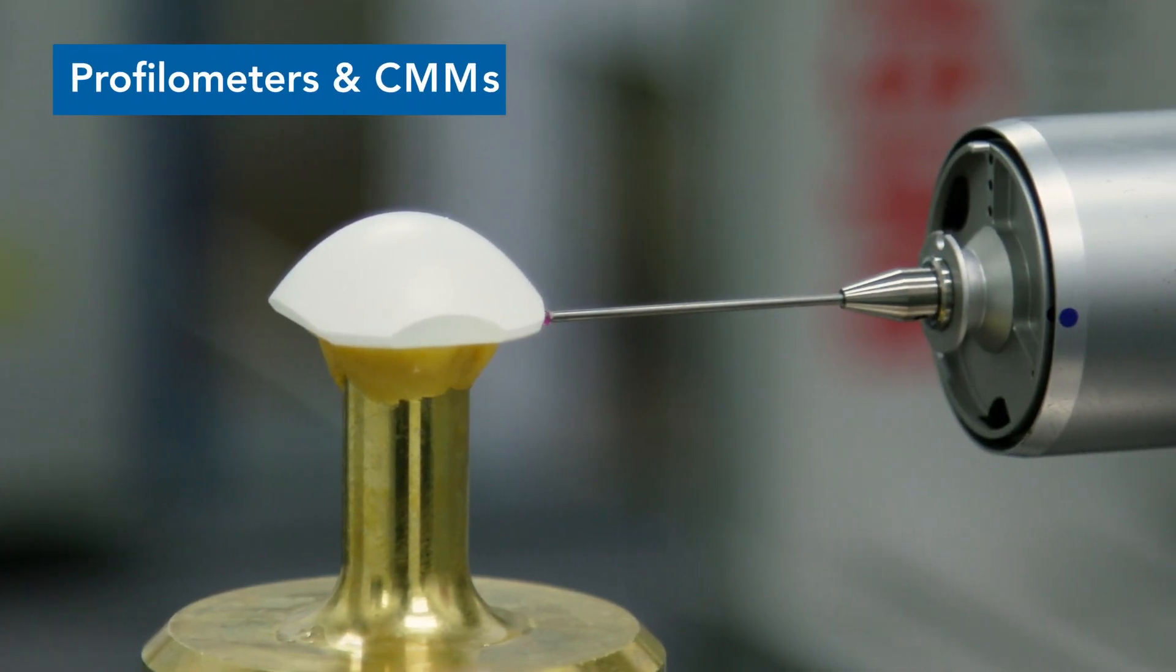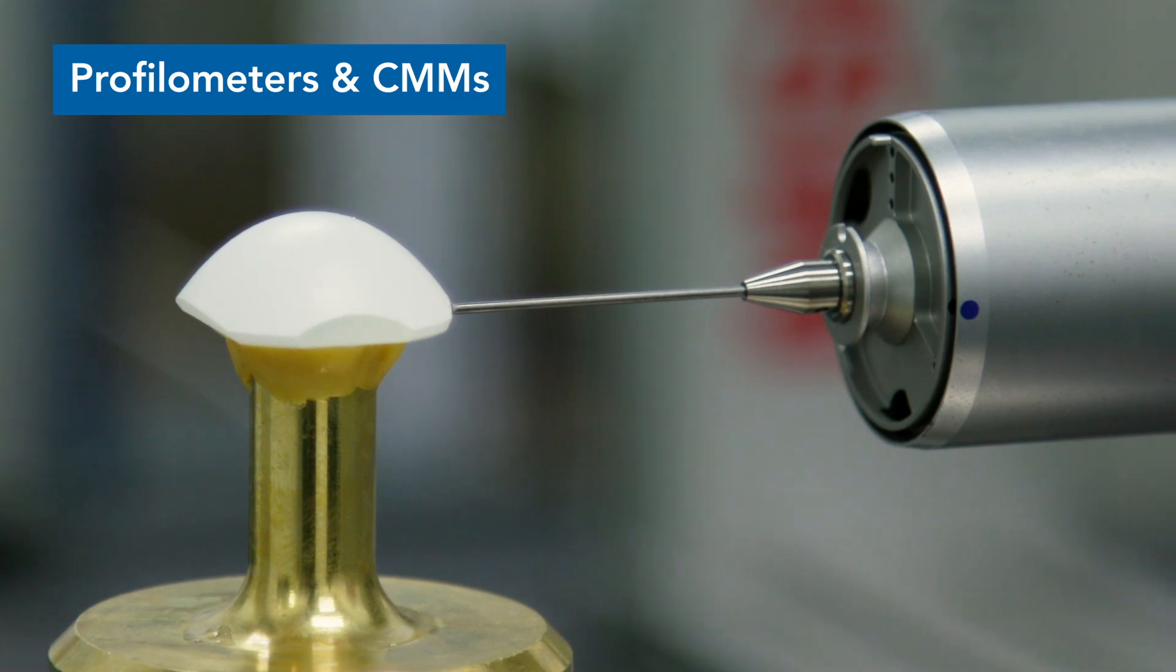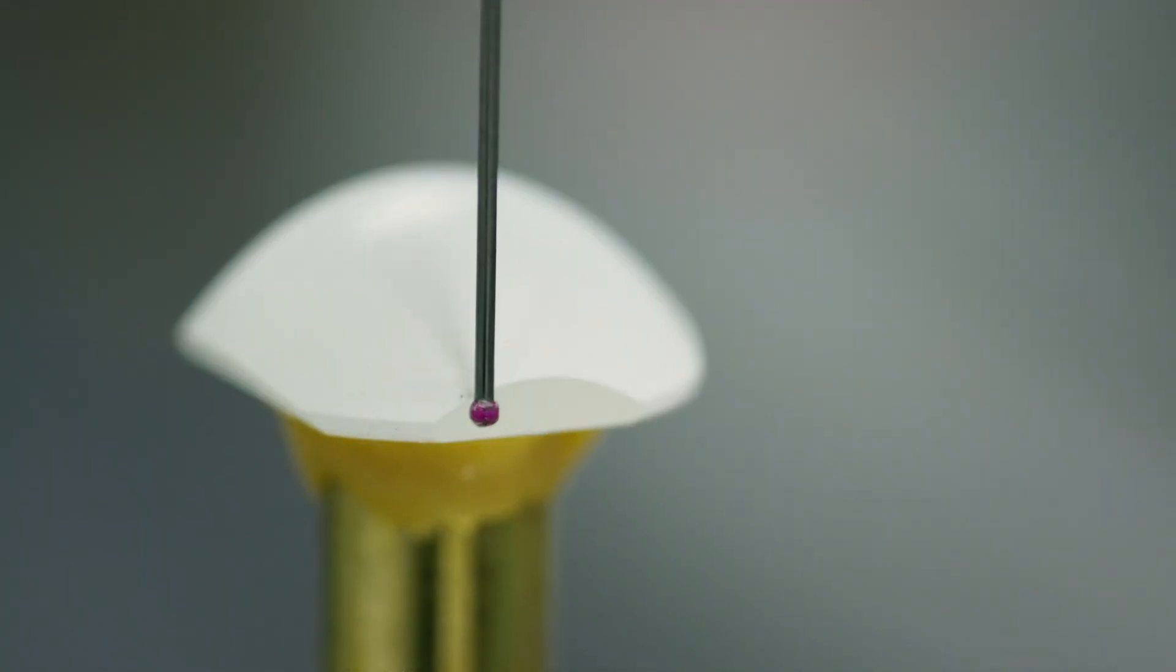Profilometers and coordinate measuring machines, or CMMs, probe the surface of optical components to determine surface curvature, flatness, and irregularity.